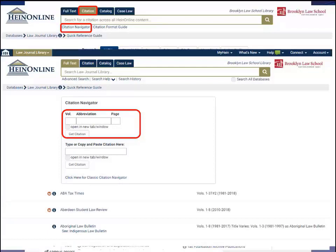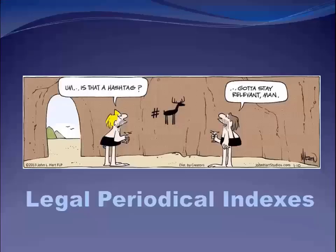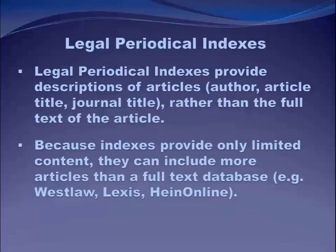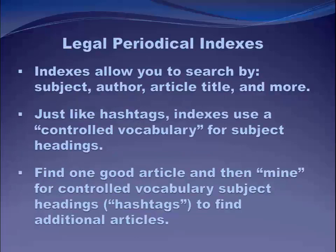Now let's talk a few minutes about legal periodical indexes — something you're probably not as familiar with. In short, legal periodical indexes are nothing more than a tool that legal scholars use to find journal articles. They're not a source themselves, but a way to find journal articles. They're basically a database that includes bibliographic information about an article — not the full text, but the author, article title, and journal title. Because they only include this limited information, they can include more articles than a full-text database like Westlaw, Lexis, or HeinOnline.